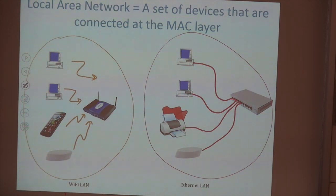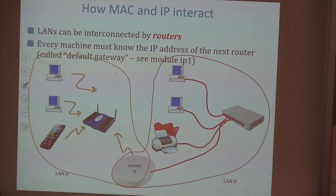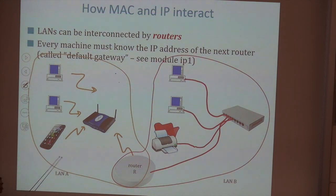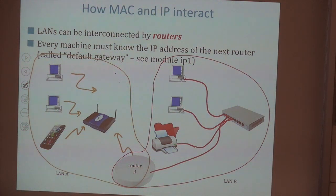Typically, you interconnect local area networks with routers — that's the classical organization of the internet. This is why the internet is called the internet and not just 'the net.' 'Inter' means to interconnect several networks. At the origin, the networks were the MAC layer structures — a Wi-Fi base station with equipment around it is one network. The internet was originally designed to interconnect various campuses that each had their own local area network.